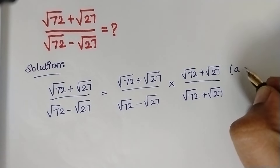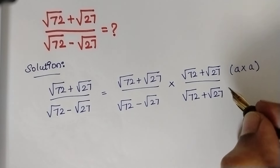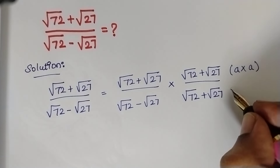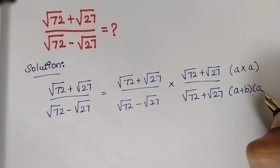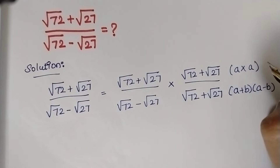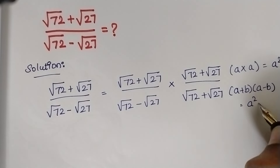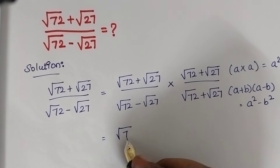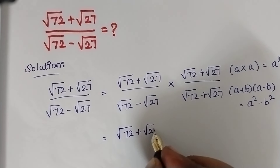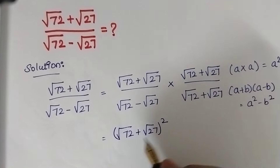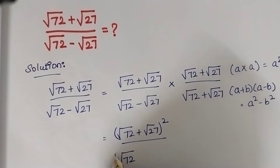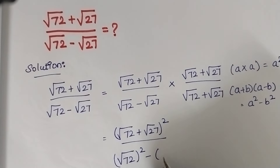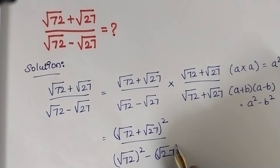Now if you see here, this is in the format of A × A. This is in the form of (A + B)(A − B). Therefore A × A is equal to A², and (A + B)(A − B) = A² − B² is the formula. So just apply these two things in their place. Therefore this becomes (√72 + √27)² divided by (√72)² − (√27)².